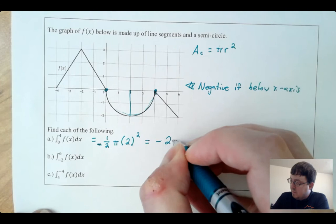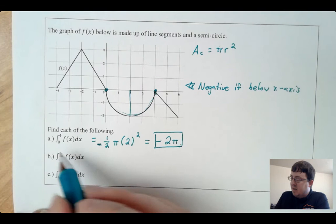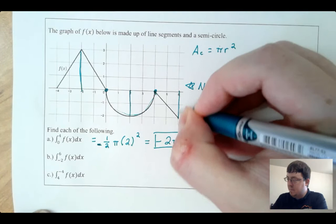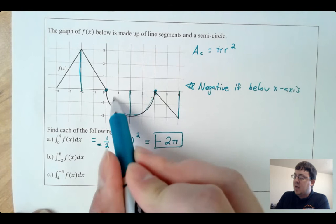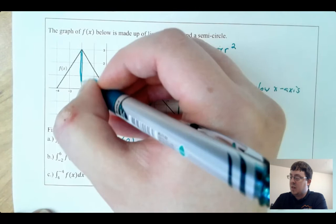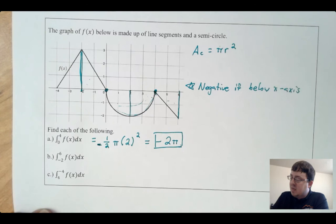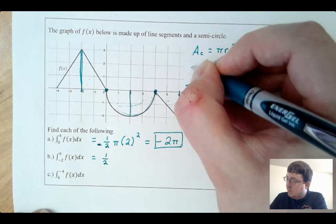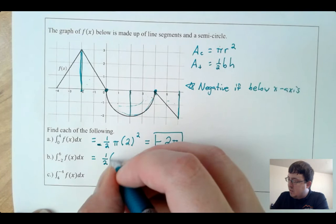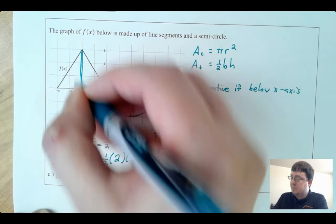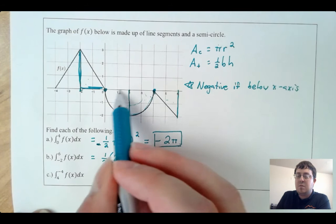Now the integral from negative 2 to 6 of f(x) dx — I want to go from here all the way to here. I already have the integral from 0 to 4, so I'm going to use that. I just have to add up these two extra pieces. For the triangle on the left from negative 2 to 0, that is above the x-axis, so I take the positive area of a triangle: one half times base 2 times height 3. Then minus 2π, because the semicircle's definite integral is negative.